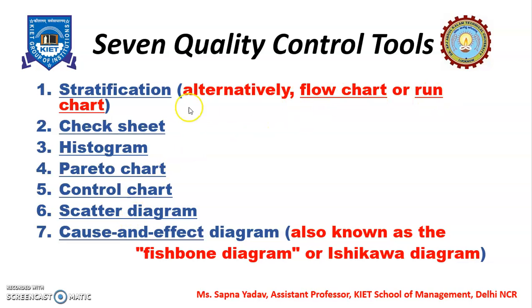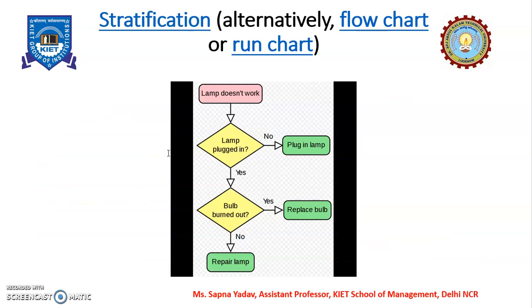Let's start with the first tool — flowchart, run chart, or stratification. In this flowchart, we simply make a flowchart of the whole production process, or we can say this is a simple visual representation of the process. In production and operations management there are some standards to develop the flowchart. For example, this symbol represents decision making. With the help of this flowchart we have clarity regarding the process, and we can identify the bottleneck of the process.